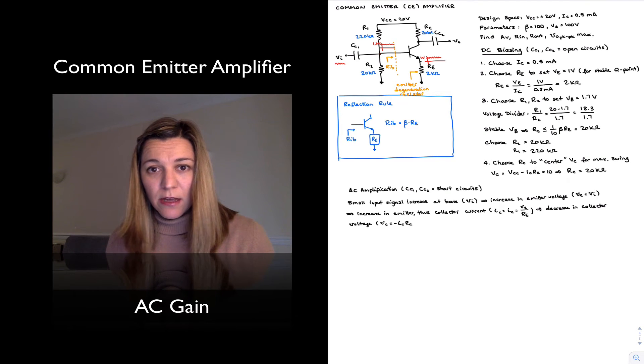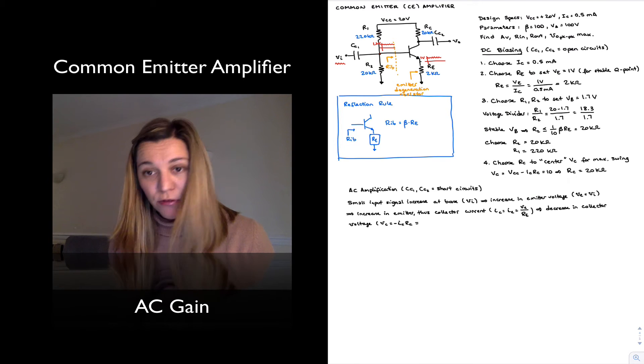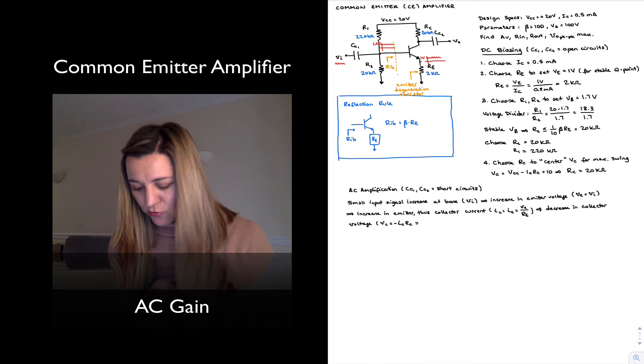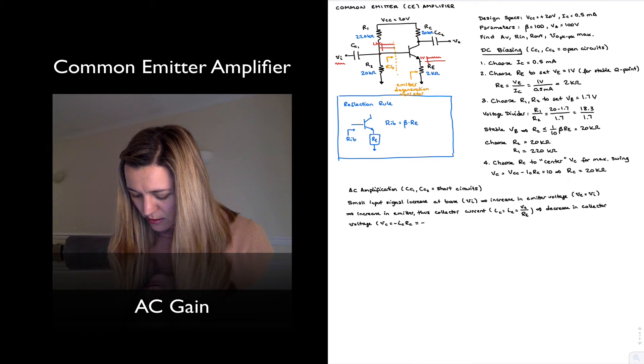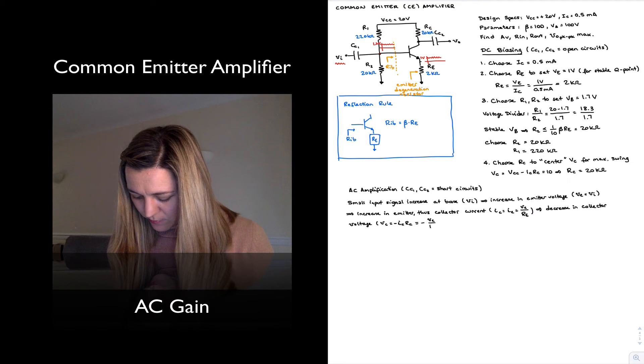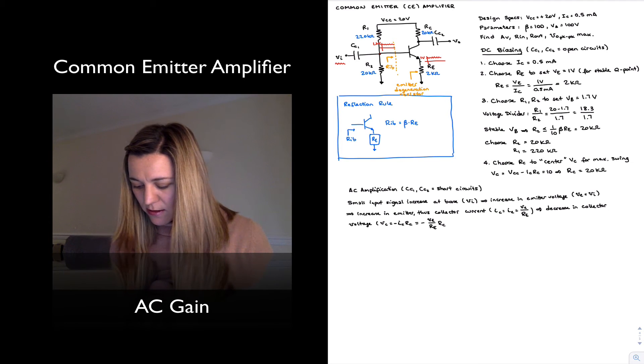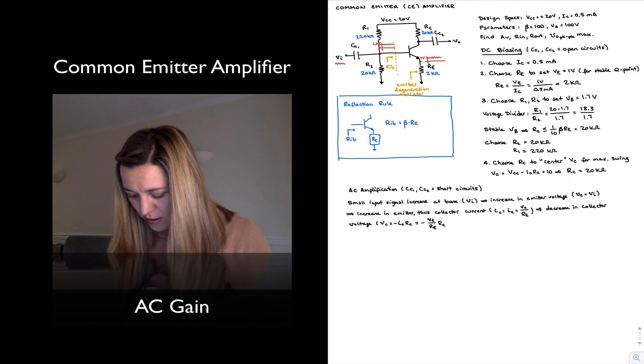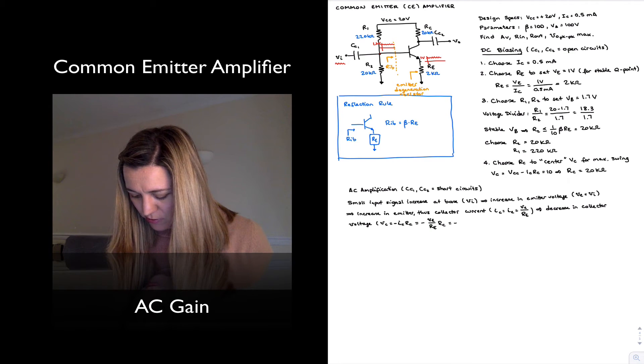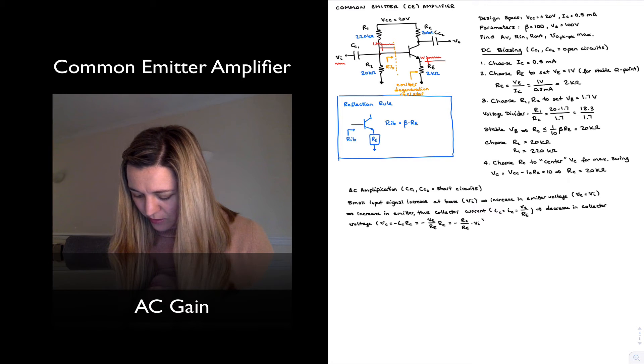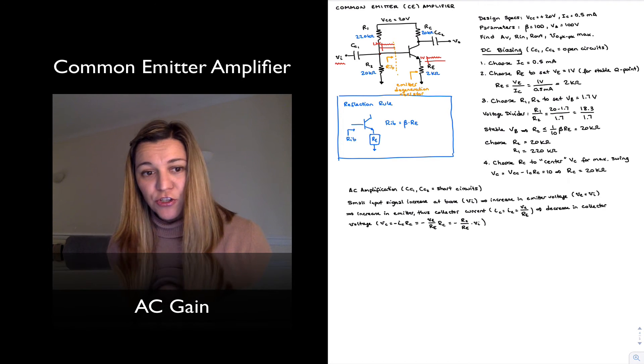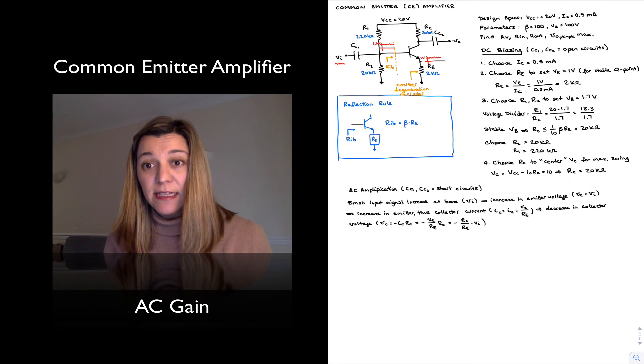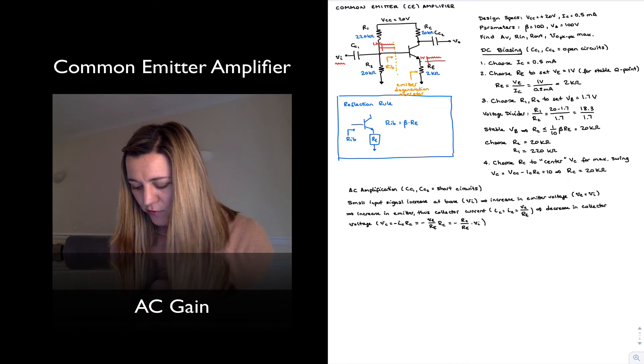And RC, we just saw that IC was equal to delta VE over RE. So this is negative IC times RC, and we just saw that IC was equal to delta VE over RE, so this is negative RC times delta VE over RE.